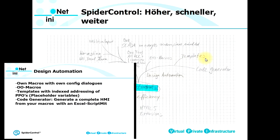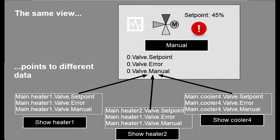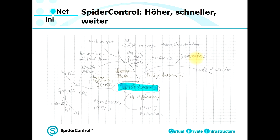Another possibility is the use of templates. Templates means I have HMI views which use indexed addressing, and I can have them point to data structures which are the same but which are used in many places in the PLC program. This makes it possible to have relatively few views and use them in many different situations, just by manipulating the pointer.